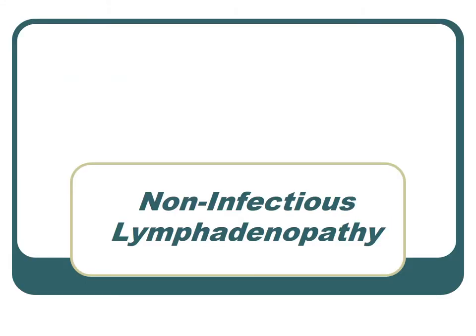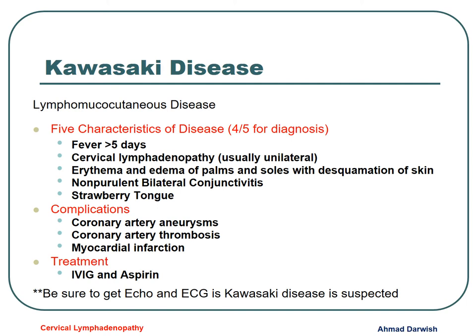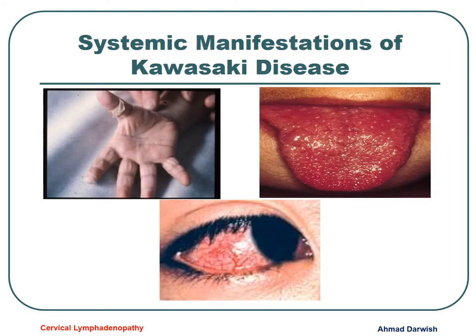One of the most important causes of non-infectious lymphadenopathy is Kawasaki disease — a lymphomucocutaneous disease. We diagnose Kawasaki by the presence of four of these five criteria: fever more than five days, cervical lymphadenopathy which is usually unilateral, erythema and edema of the palms and soles with desquamation, non-purulent bilateral conjunctivitis, and strawberry tongue. Complications include coronary artery aneurysm and myocardial infarction, so we do ECG and ECHO. Treatment is intravenous immunoglobulin and aspirin. These figures show the strawberry tongue, the non-purulent conjunctivitis, and the peeling or desquamation of the palms and soles.